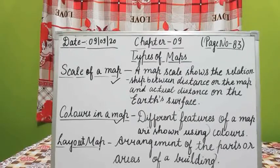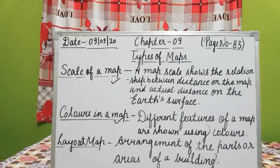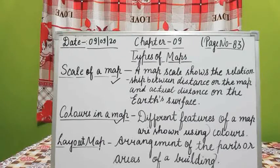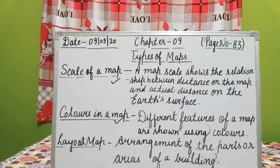The next topic given in your book is signs and symbols. Besides colors, a map uses a set of internationally recognized signs and symbols. Internationally means signs and symbols which all or the maximum number of countries should know.